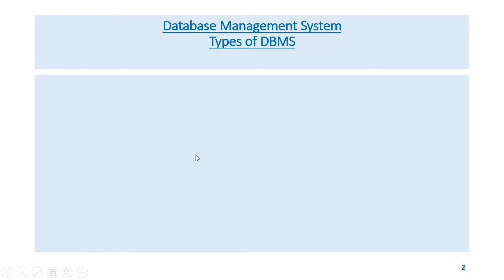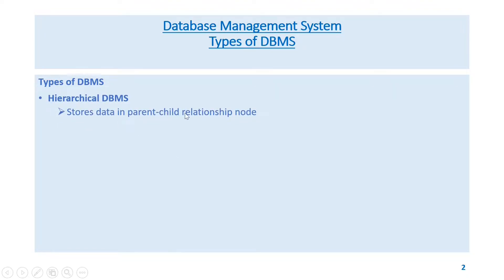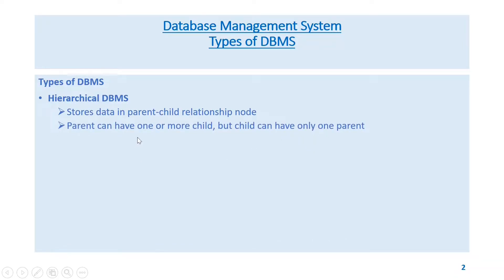Types of DBMS: Hierarchical DBMS stores data in a parent-child relationship node. A parent can have one or more children, but a child can have only one parent.